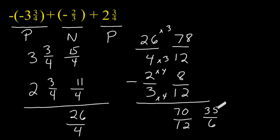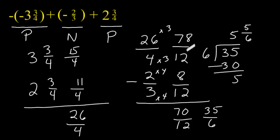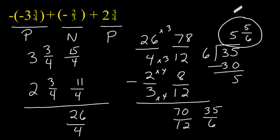We cannot simplify this any further. So next we take the numerator and divide it by the denominator. 35 divided by 6 gives us 5 wholes and a remainder of 5 over 6. We have to make sure we have the correct sign: when we combined this positive value with this negative value, 78 over 12 has a greater absolute value than the negative value, so our answer has to be positive. The result is positive 5 and 5 sixths. Those were a couple of examples of what you can do when you have to add and subtract negative and positive fractions.